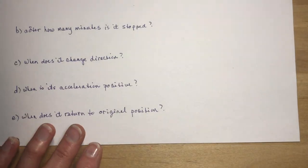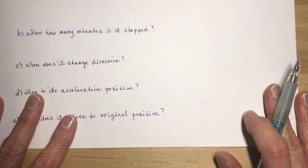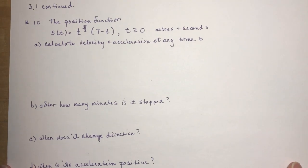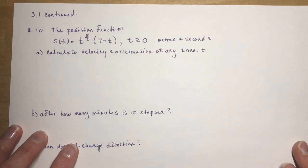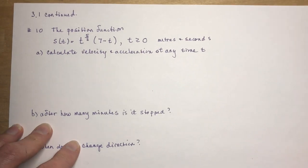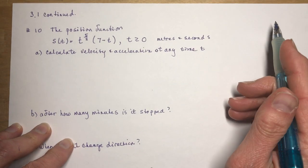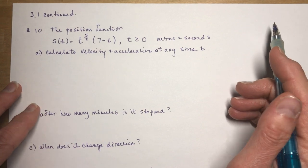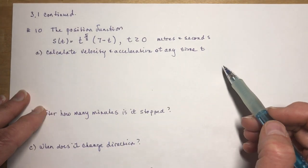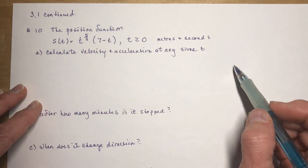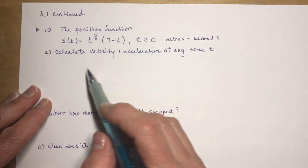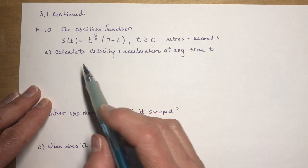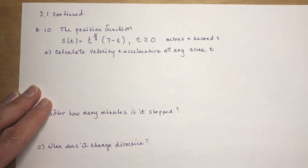I'm going to do one more example since I had to start another video anyway. If you think you've got it figured out, go try number 10 on your own and come back and check your answer. The problem is: calculate the velocity and acceleration at any time t.